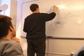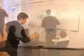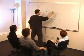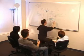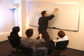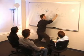Another problem with this arrangement is occlusion, where the person at the whiteboard gets in the way of the others observing. This is even more of a problem with several people working at the board together.